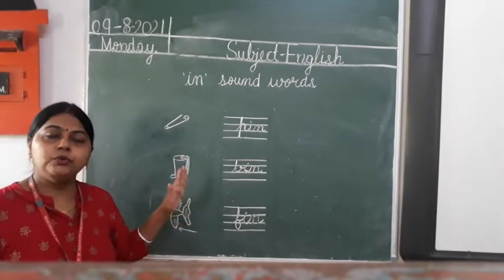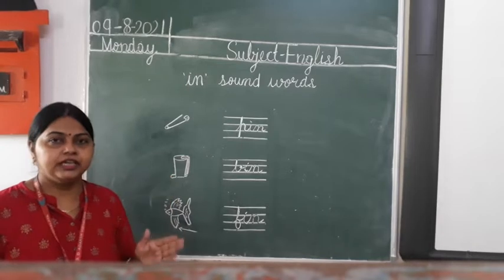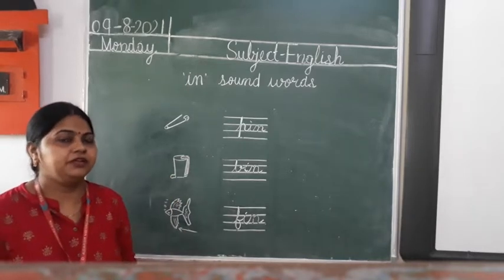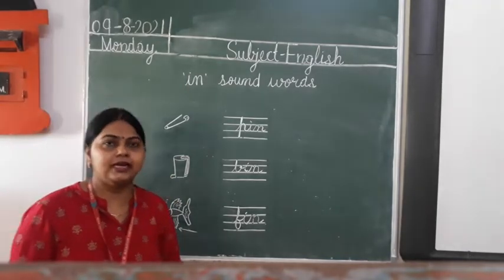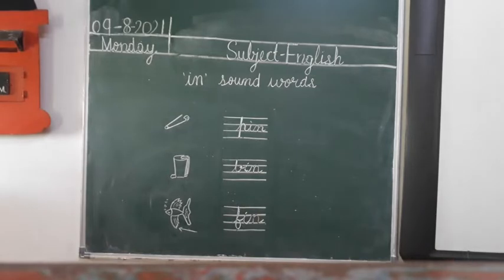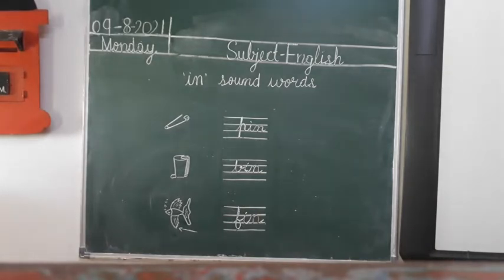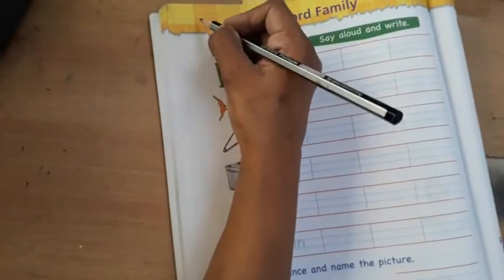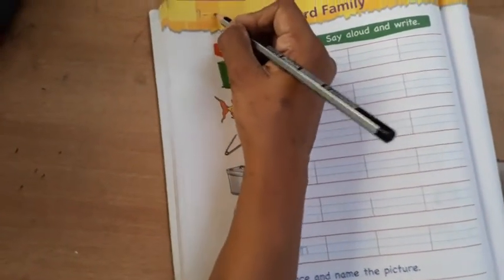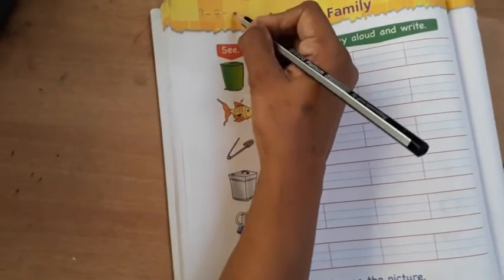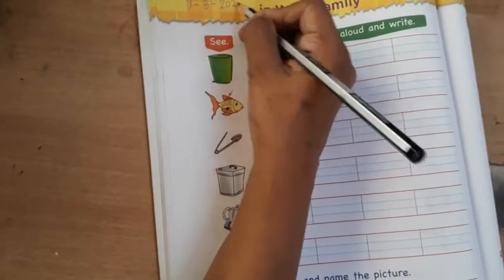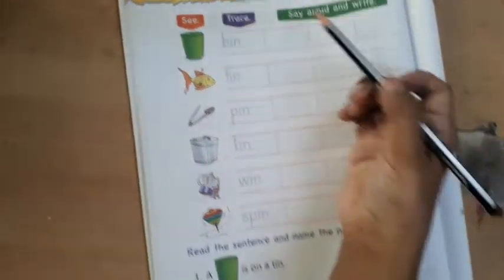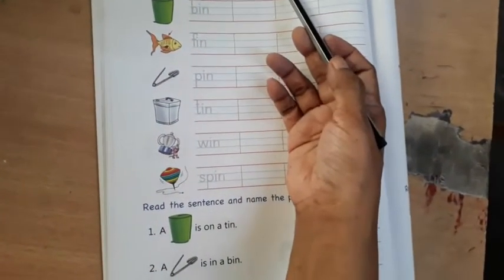Now I will show you one page of your English book that you have to complete. This is page number 34, and today the date is 9th August 2021. In word family.